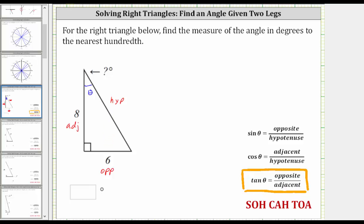So using our right triangle, we now know that tangent theta is equal to six-eighths, or three-fourths.